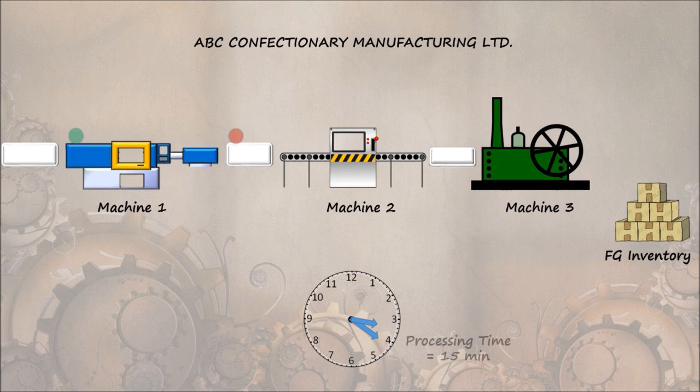It takes a further 15 minutes in Machine 2 to process, and the time on the clock reaches 3:30. Meanwhile, another product enters into Machine 1. Now the output from Machine 2 goes to Machine 3, where it takes half an hour to convert into finished goods.